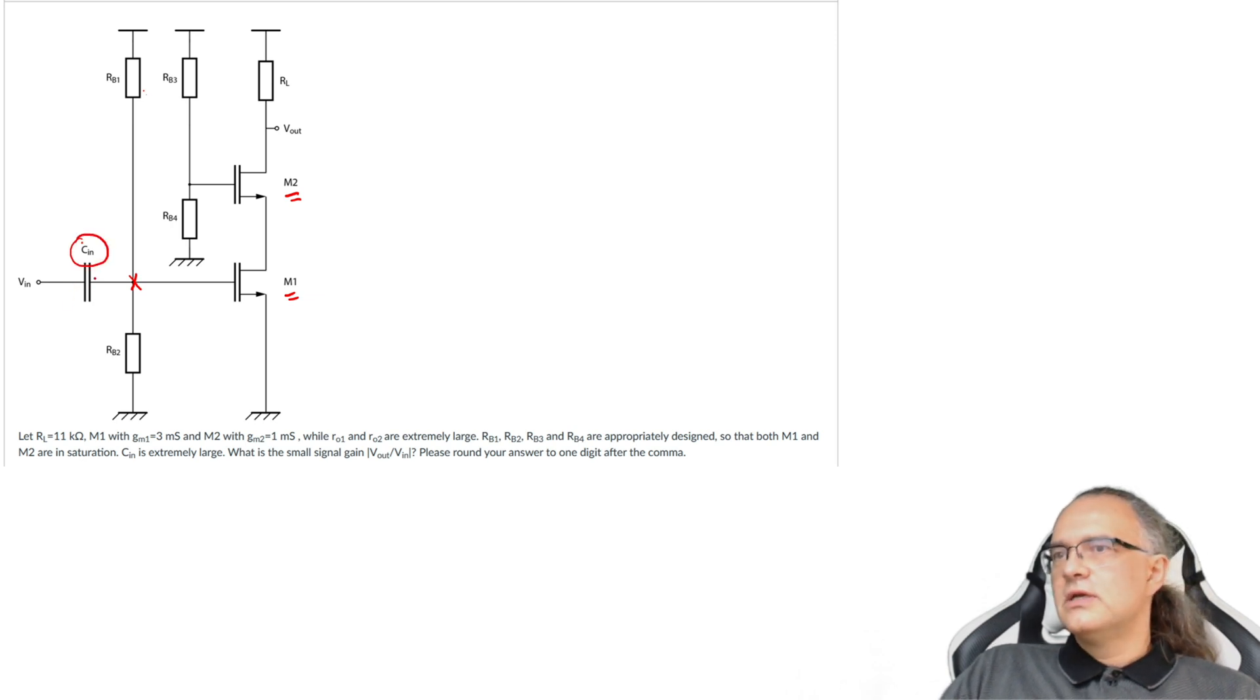So this is extremely large and it decouples only DC but for AC signals it can be considered as short. So basically the node VIN is connected directly here to the gate of the amplifying transistor M1.